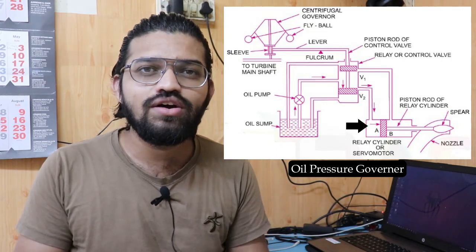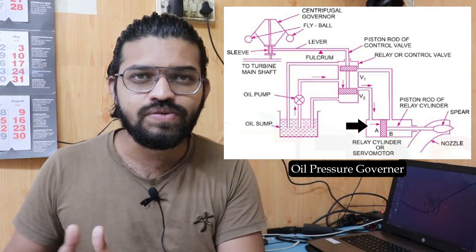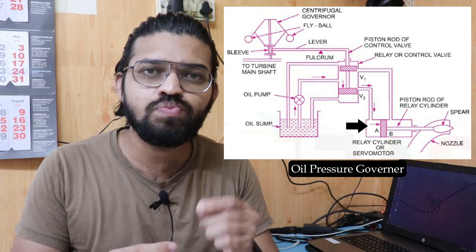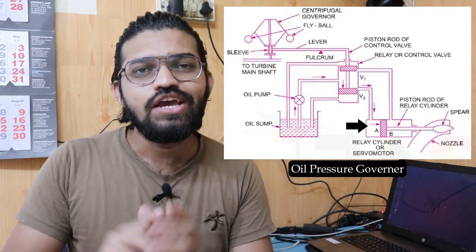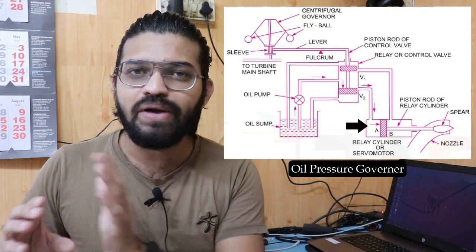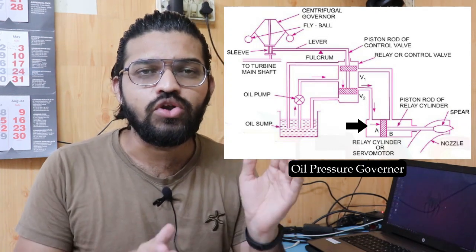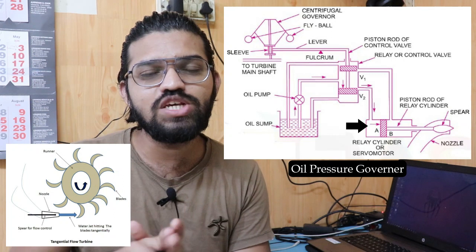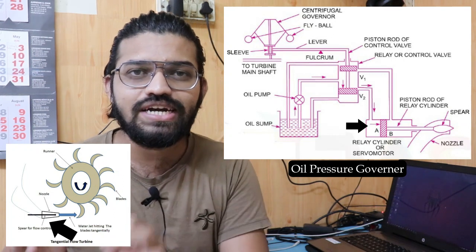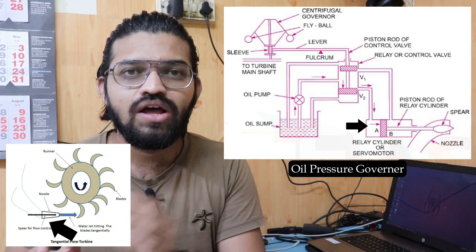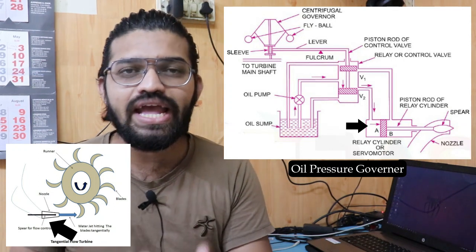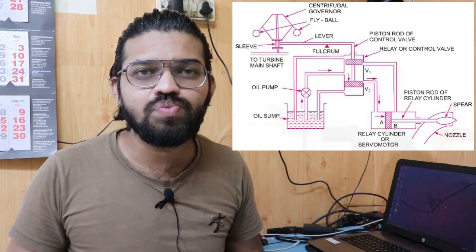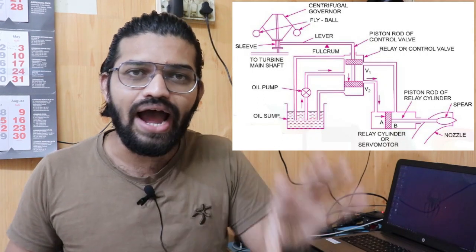The two openings of the control valve are connected to the relay cylinder, also called the master cylinder, which has two inputs and a piston-cylinder assembly. The piston rod is connected to the spear, which is inserted into the nozzle of the Pelton wheel turbine. The movement of the spear controls the opening area of the nozzle and ultimately controls the flow rate of the fluid.